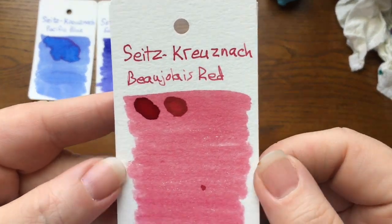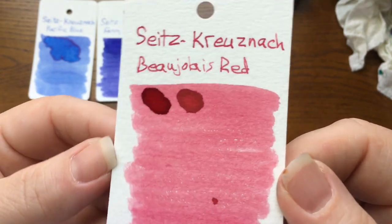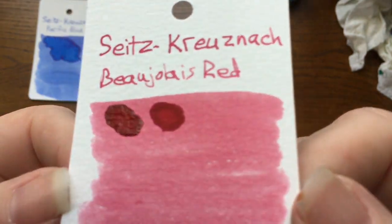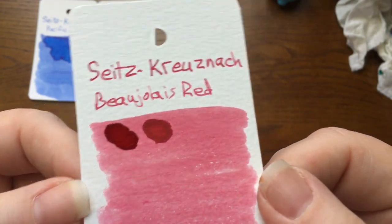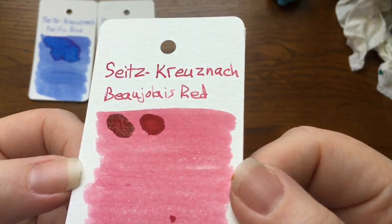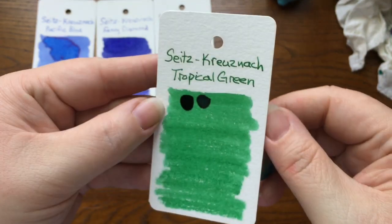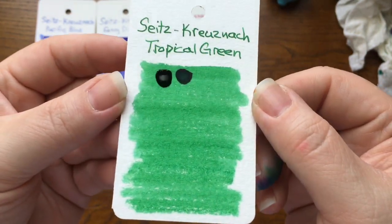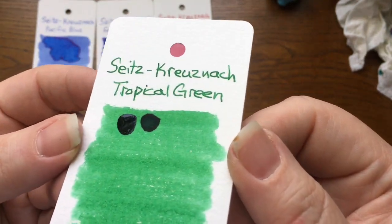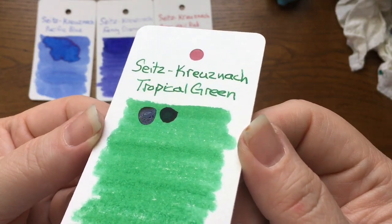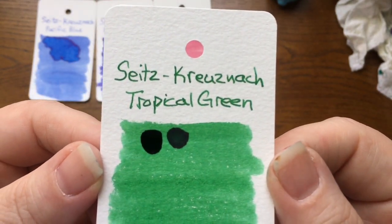Next up is Beaujolais Red. The writing seems a bit darker, but the swatch is very light. It's more like pink. And it's actually still drying a little bit, which is surprising. My goodness. Can you see that it's wet? Not really. It still looks wet. But it doesn't look like sheen, it just looks wet. Here is Sitz Cruise Knock Tropical Green. Again, his little blobs are still drying. Gosh, I thought I gave these guys plenty of time to dry. And he might have the tiniest hint of sheen around the edges. Just a touch. But still a pretty bright green, and maybe some shading going on there.